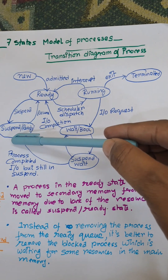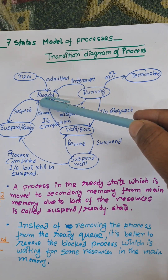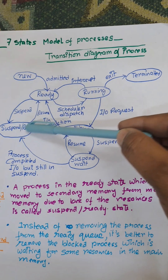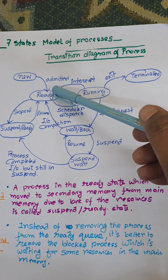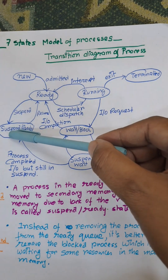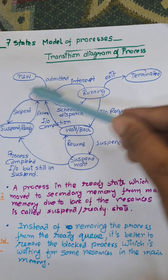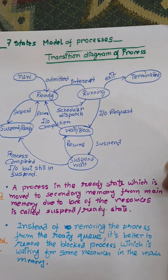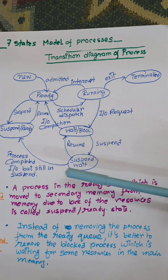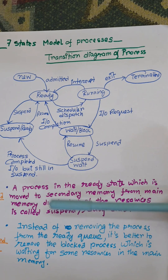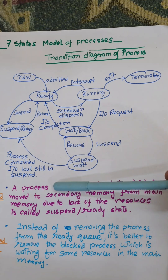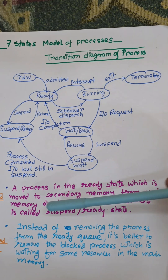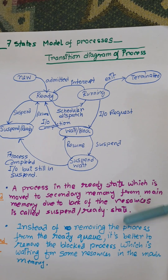From the suspend ready state, it goes to the ready state for further execution. From ready, it can be suspended back to the suspend state. Suspend ready means a process in the ready state which is moved to secondary memory from main memory due to the lack of resources.